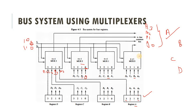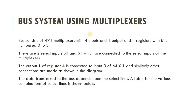For example, when the selection line is 00, the data of register A is transferred onto the bus. Suppose A0 contains 1, A1 contains 0, A2 contains 0, and A3 contains 1 — then the binary value 1001 is now transferred onto the bus. The bus consists of four 4×1 multiplexers with four inputs and one output, and registers with bits numbered 0 to 3.